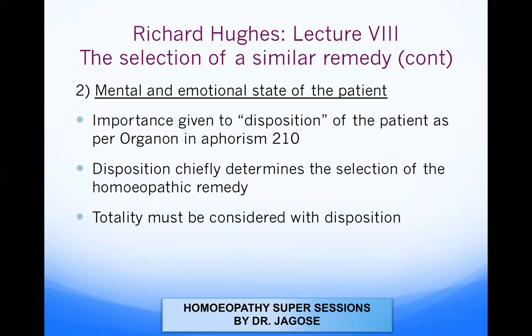The second point is the mental and emotional state of the patient. Importance is given to the word 'disposition' as per Organon paragraph 210, which states that disposition chiefly determines the selection of the homeopathic remedy and the totality must be considered with the disposition. Hahnemann also noted that Nux Vomica will not be given to a calm and quiet disposition — it must be given to a nervous, irritable, and angry disposition. Pulsatilla has a disposition of mild, gentle, and nervous.